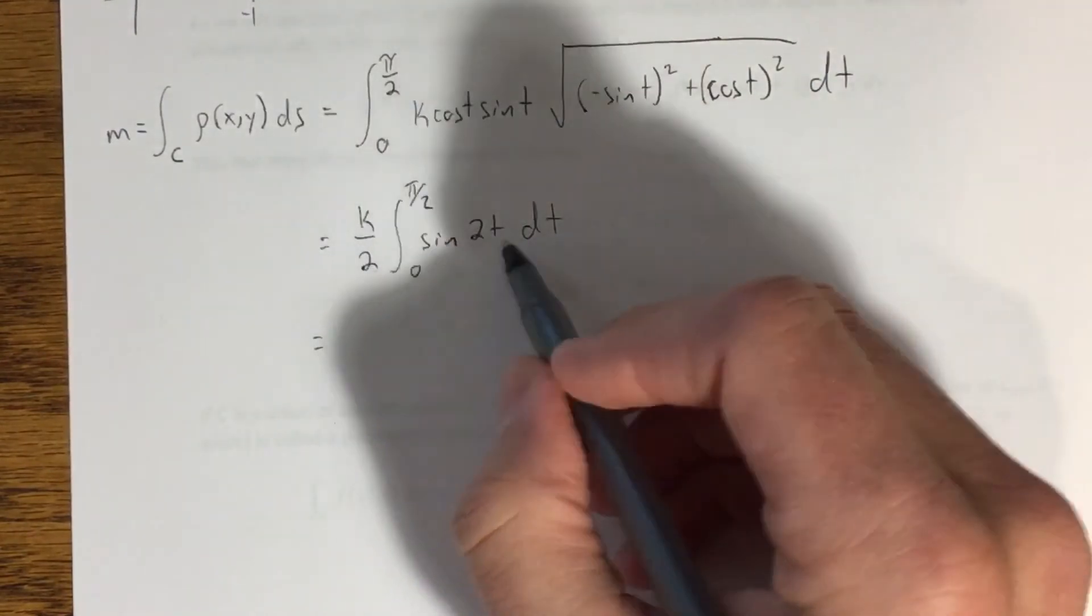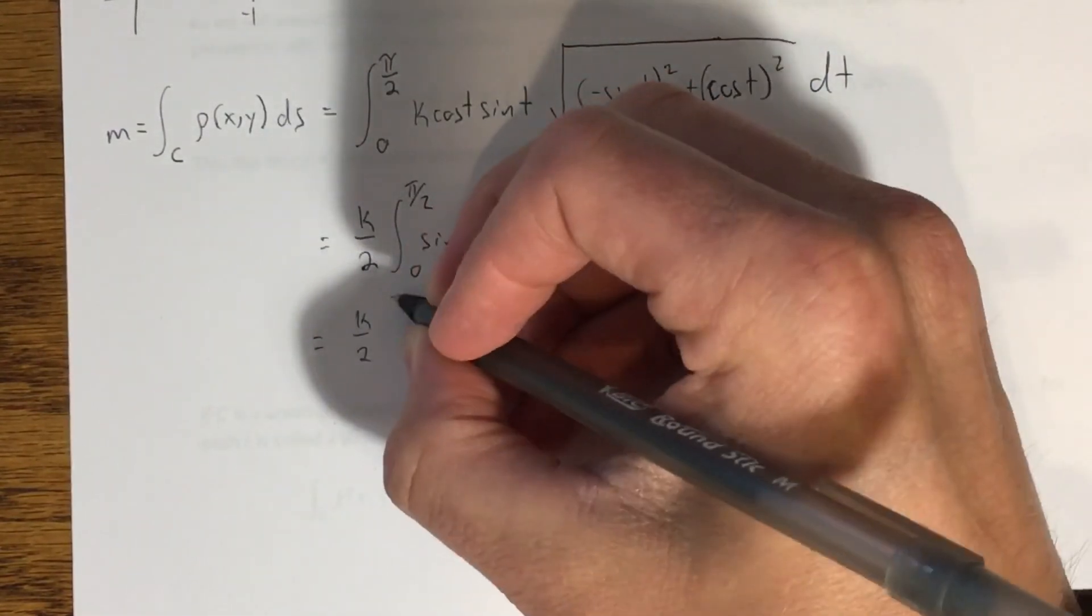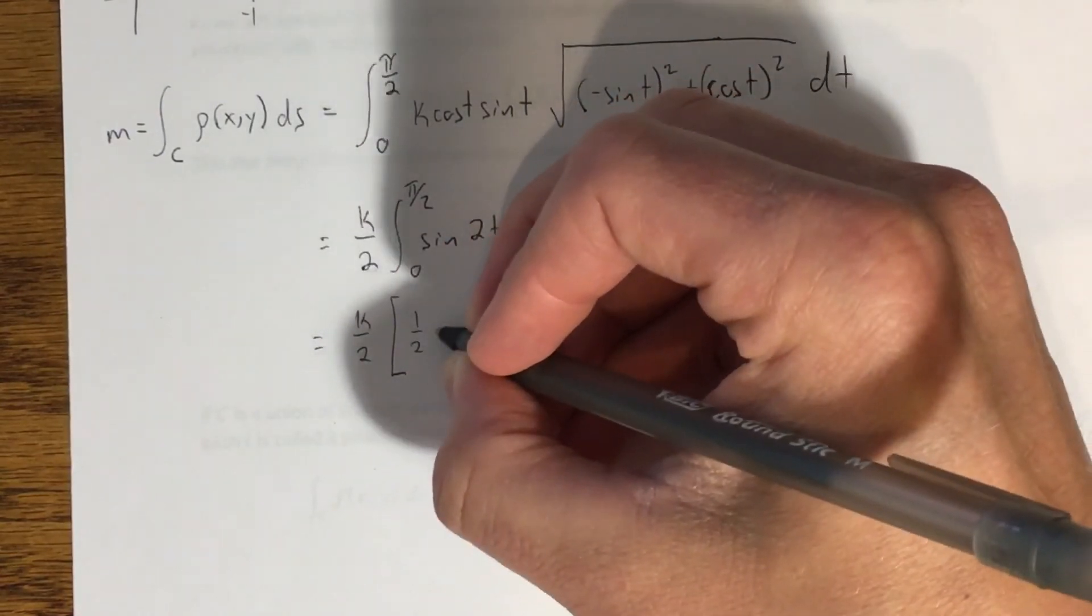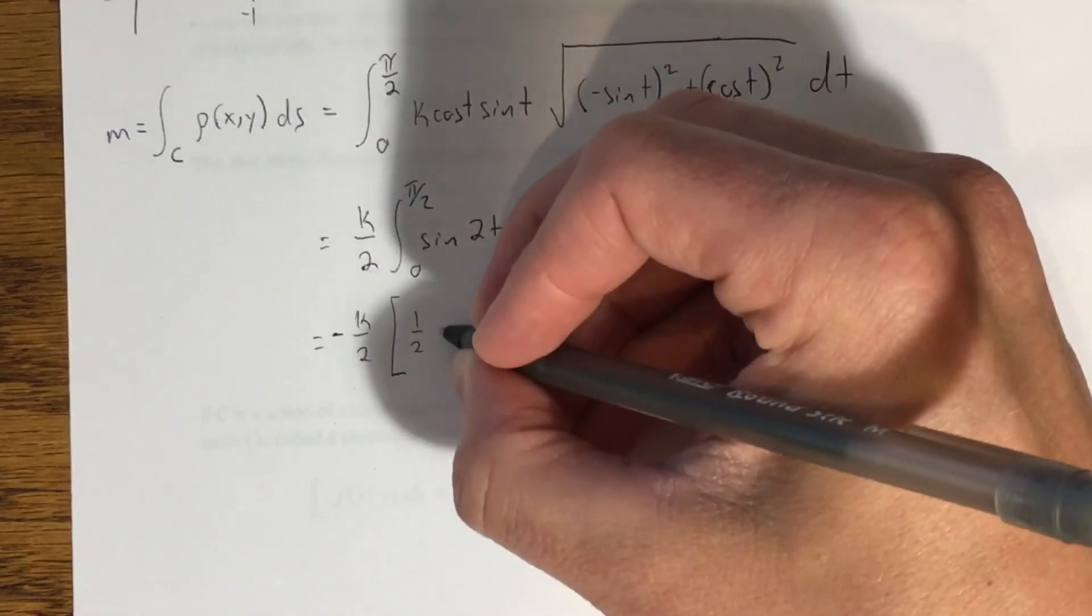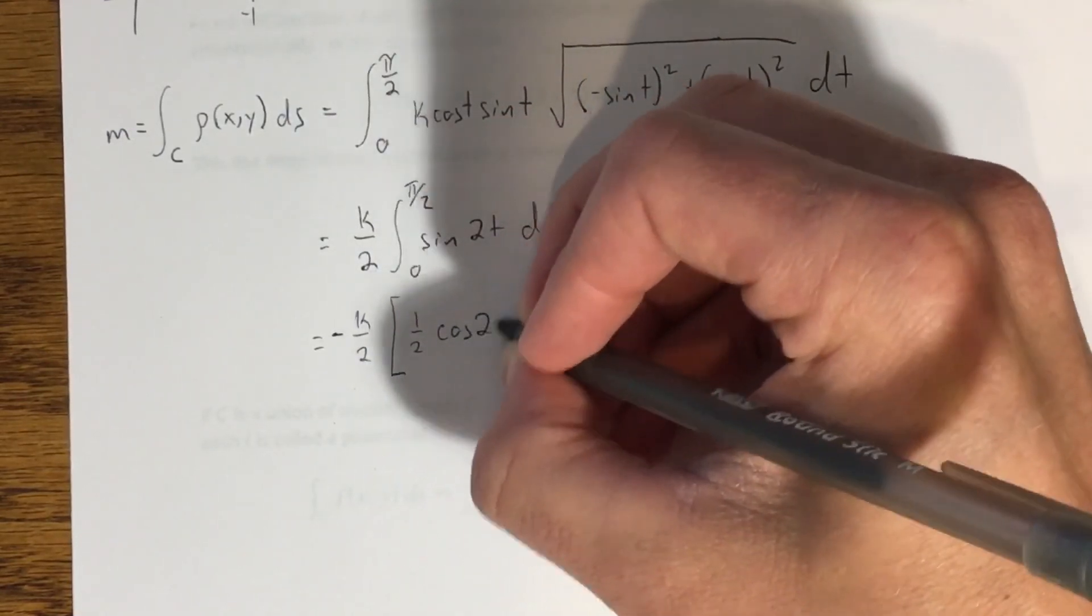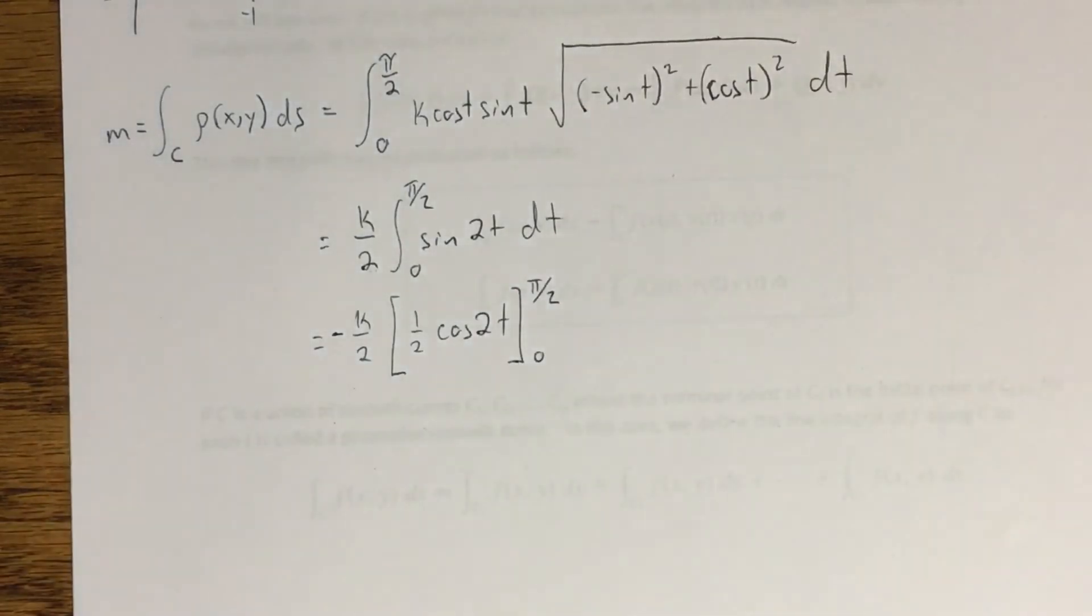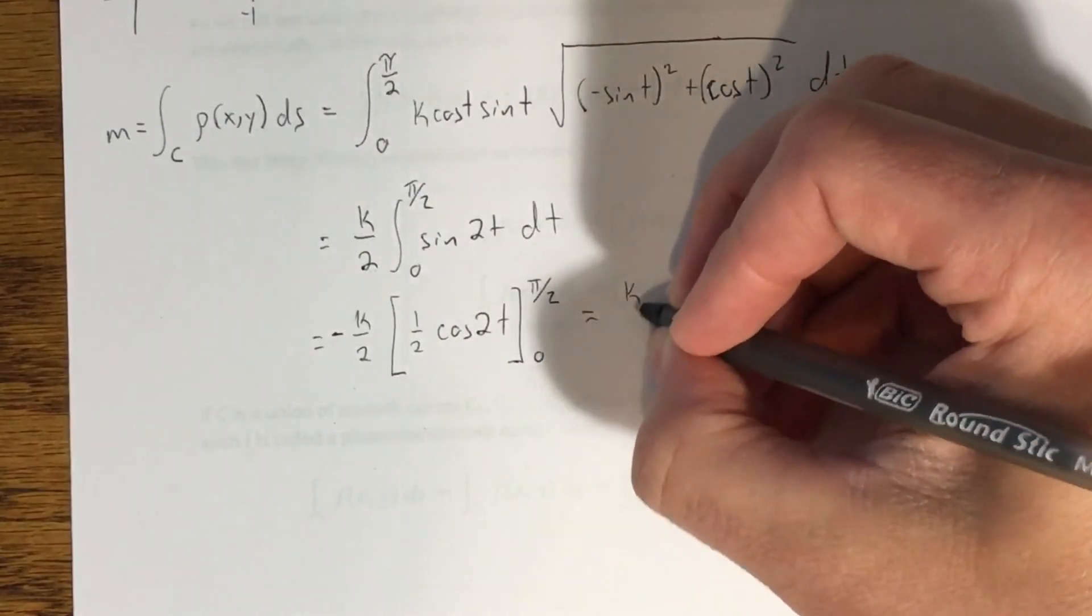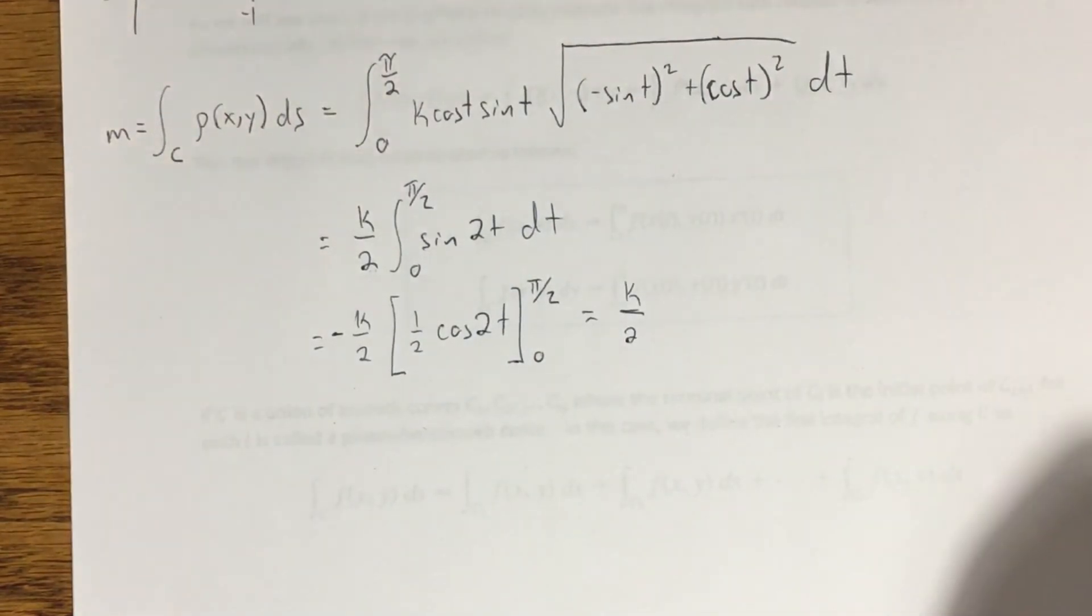Next up, if I evaluate this integral right here, this is going to become k over 2 times 1 half, actually it's negative 1 half, I'll pull the negative out here, negative 1 half cosine of 2t from 0 to pi over 2. Okay? Evaluating this gives me k over 2, which you can work out the arithmetic on that, but that's what that mass comes out to. So now I need to evaluate my x bar and y bar.